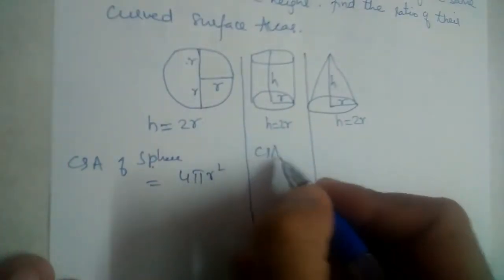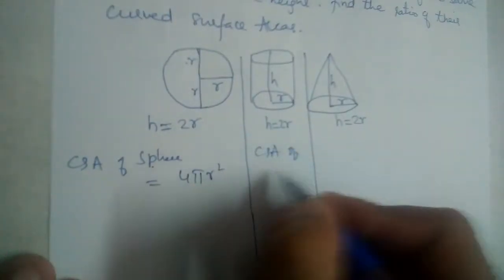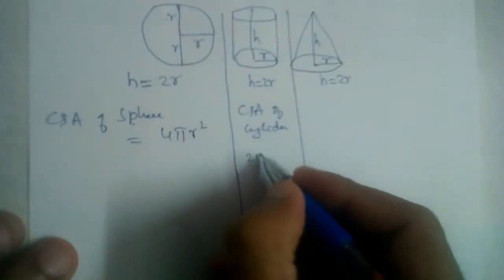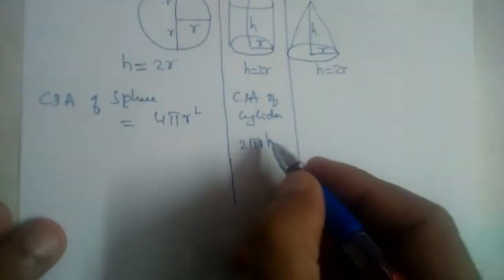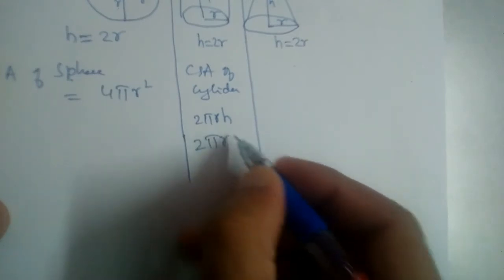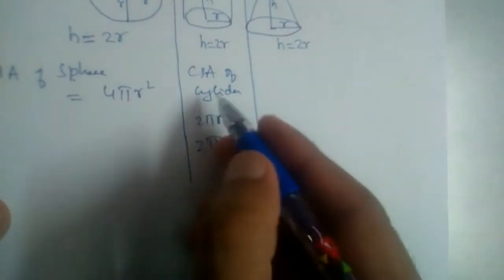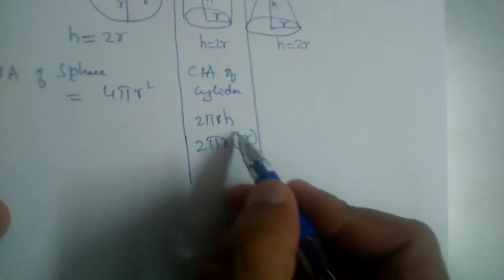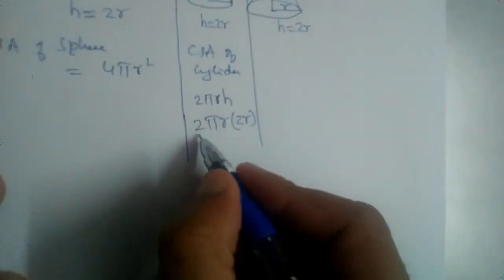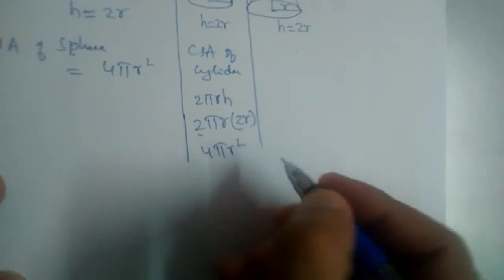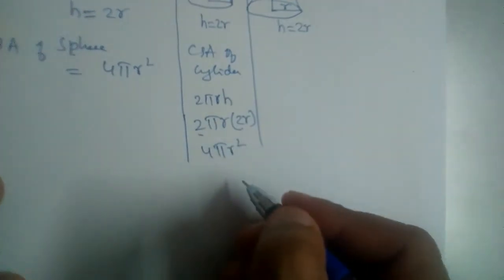Now, the curved surface area of the cylinder is 2πRH. We substitute H = 2R, so this becomes 2πR × 2R, which gives us 4πR².